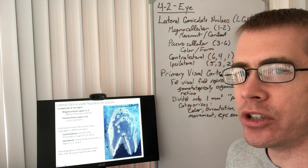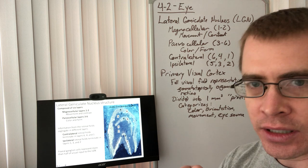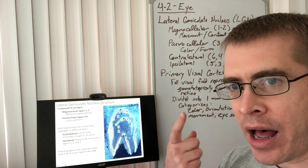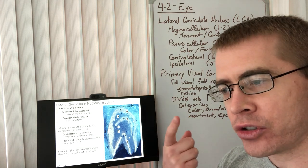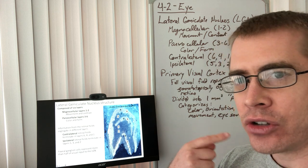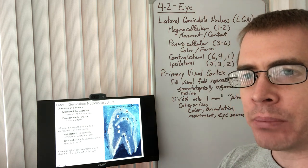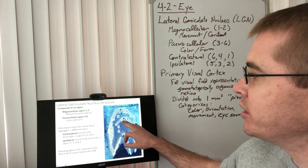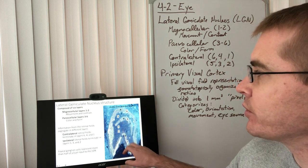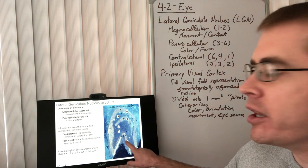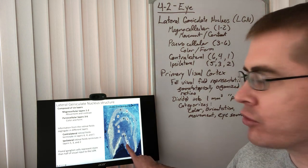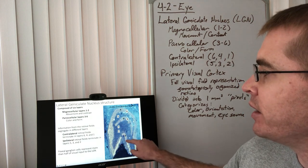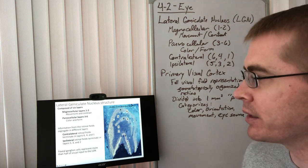How do we know that these projections occur? We inject a dye into one of the eyes, and we watch how that dye travels along the axons to end up being deposited in the LGN. Label from the contralateral eye was added, and we can see that label is deposited in layers 1, 4, and 6.